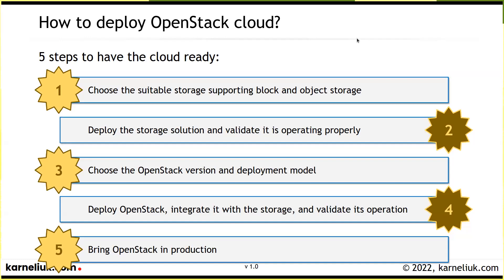Ultimately, our plan is consisting of five steps. The first one is to figure out what storage we are going to use. Before starting to build OpenStack, we need to have up and running storage. Then, once we figure out which storage we are going to use and how and why, we'll talk about the deployments, making sure we bring the storage solution to operation. Then we move to choosing the components, figuring out the mode of deployment, proceeding with the OpenStack deployment, and finally bringing OpenStack into operation.